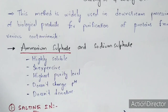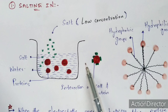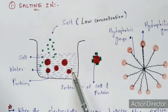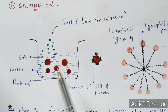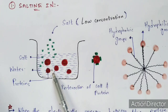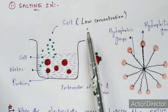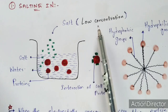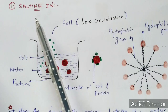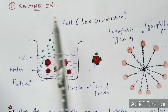Now let us learn about the salting in process. First, take a beaker or container, pour some water — H₂O molecules — into it, and then add protein molecules into that water. The red circular shapes I have drawn represent the proteins. Now add salt, and the important thing to remember is that the salt must be added in low concentration only. If you add salt in high concentration, the process is called salting out; here the process is salting in, so we use low concentration.